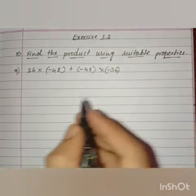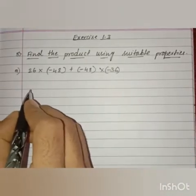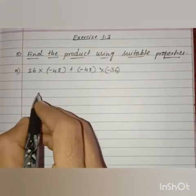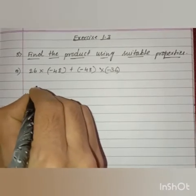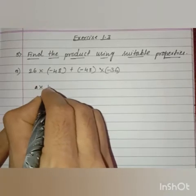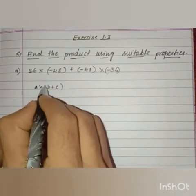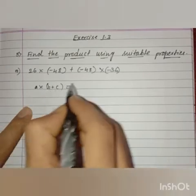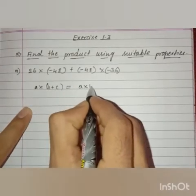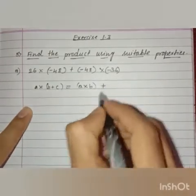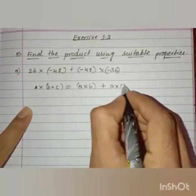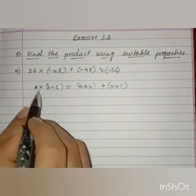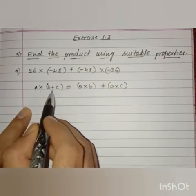So, what is the general formula of distributive property of multiplication over addition? That is a into b plus c is equals to a into b plus a into c. So, this is the distributive property of multiplication over addition.